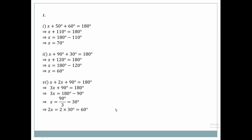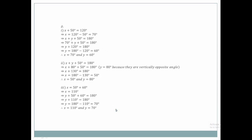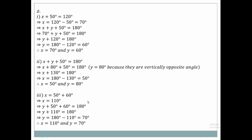Question number 2. The exterior angle property is 6.2. So you can see that X plus 50 degrees equals 120 degrees. So X equals 120 degrees minus 50, which is 70 degrees. X is 70 degrees.